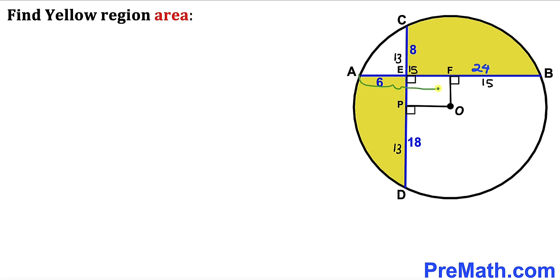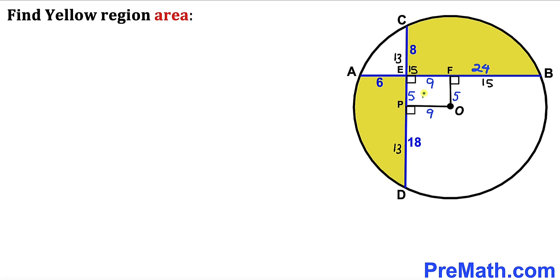Segment AF is 15 and segment AE is 6, so segment EF is 15 minus 6 equals 9 units. This side length EF of the rectangle turns out to be 9 units. Segment CP is 13 and segment CE is 8, so segment EP is 13 minus 8 equals 5 units. Since we are dealing with this rectangle, side length OF is 5 units and segment OP is 9 units.